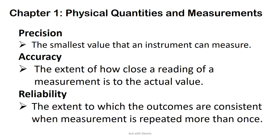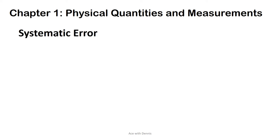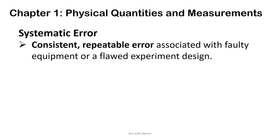Reliability: The extent to which the outcomes are consistent when measurement is repeated more than once. Systematic error: Systematic error is consistent, repeatable error associated with faulty equipment or a flawed experiment design.